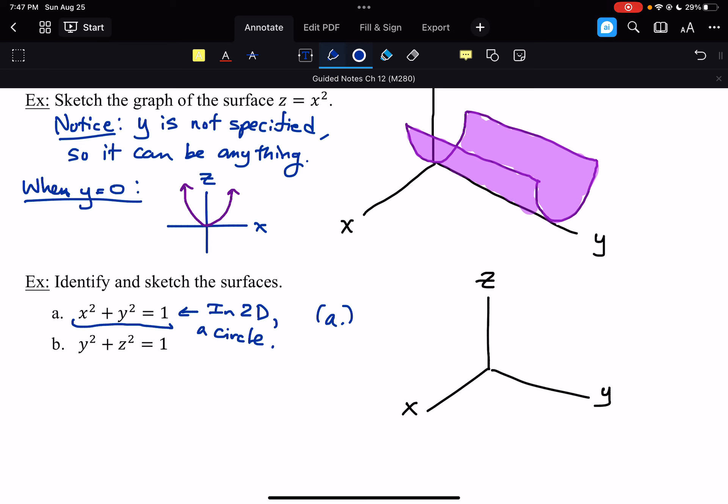x squared plus y squared equals 1 gives us a circle of radius 1 centered at the origin. However, because we're working in 3D, it's a little bit different. So notice here that z is not specified. So the shape is still a circle, but the z value can be anything.